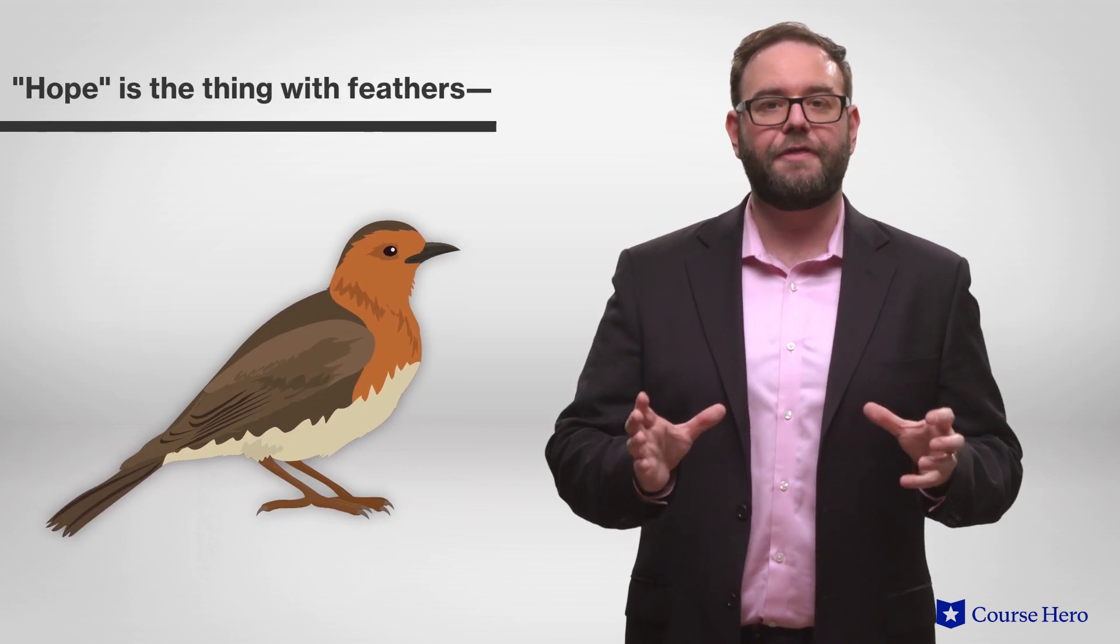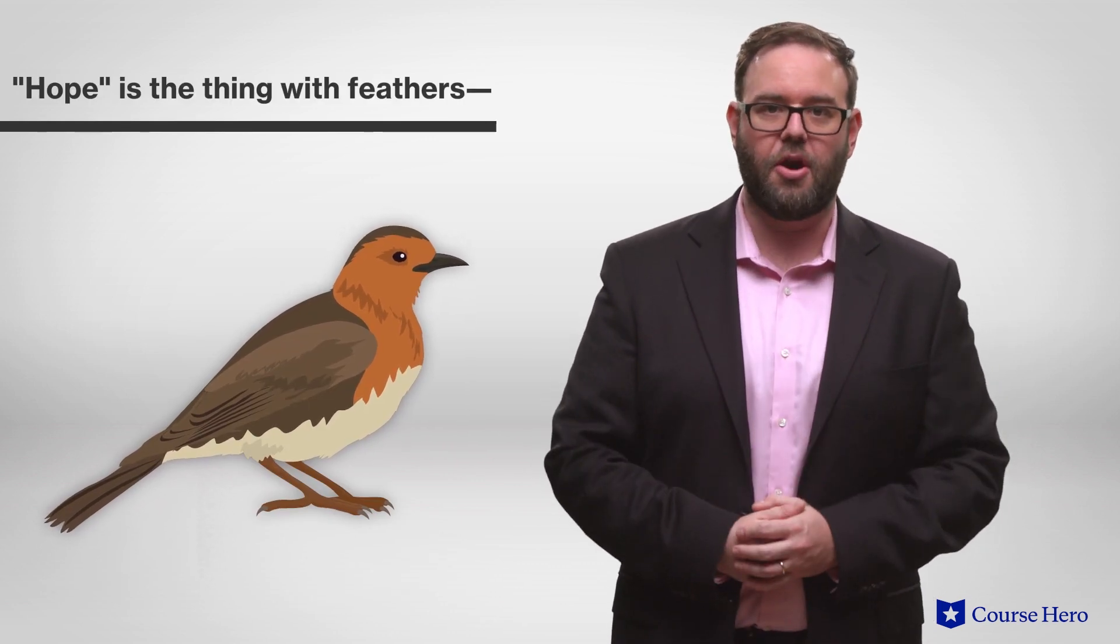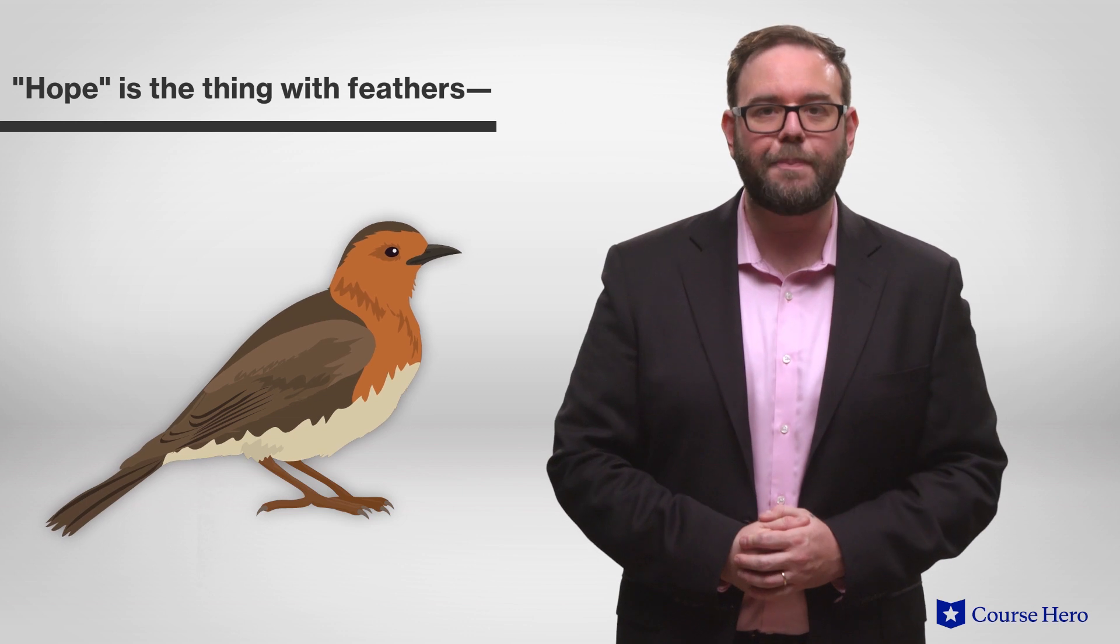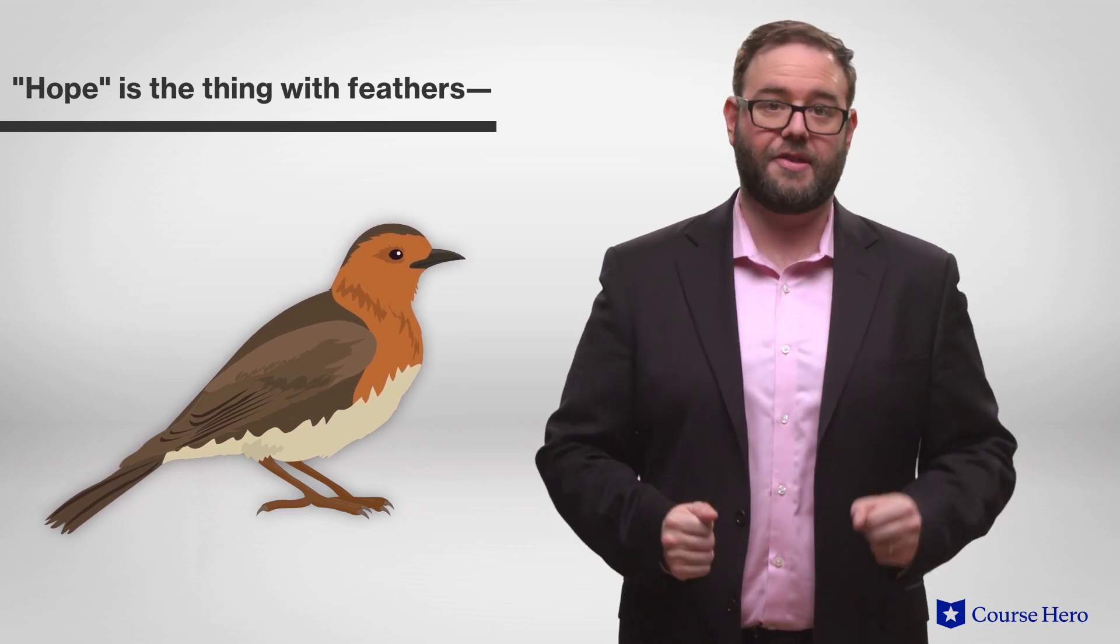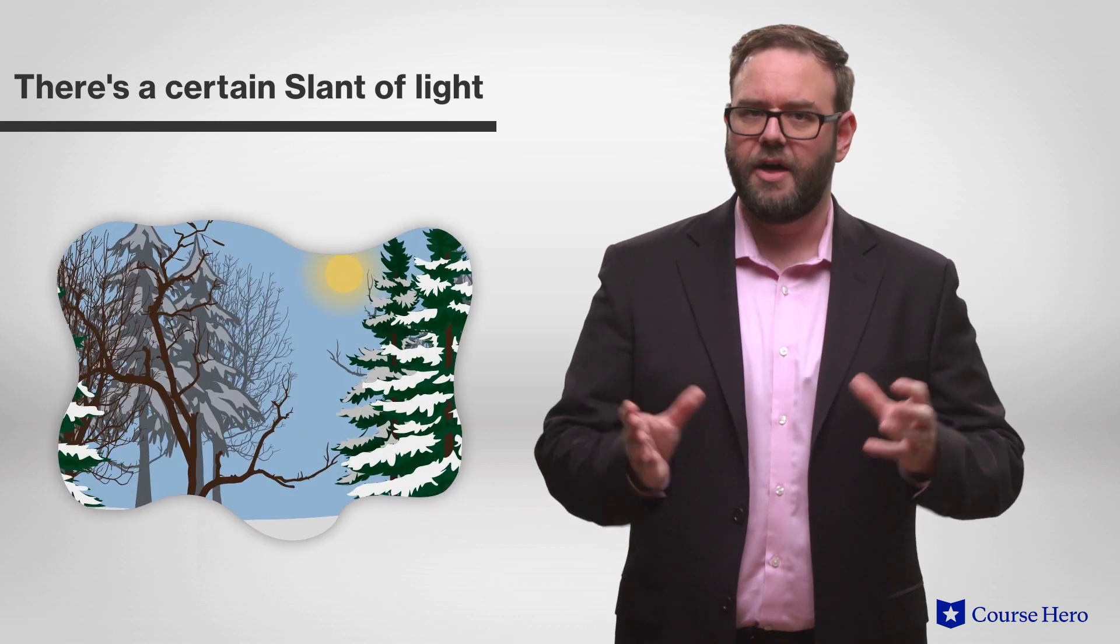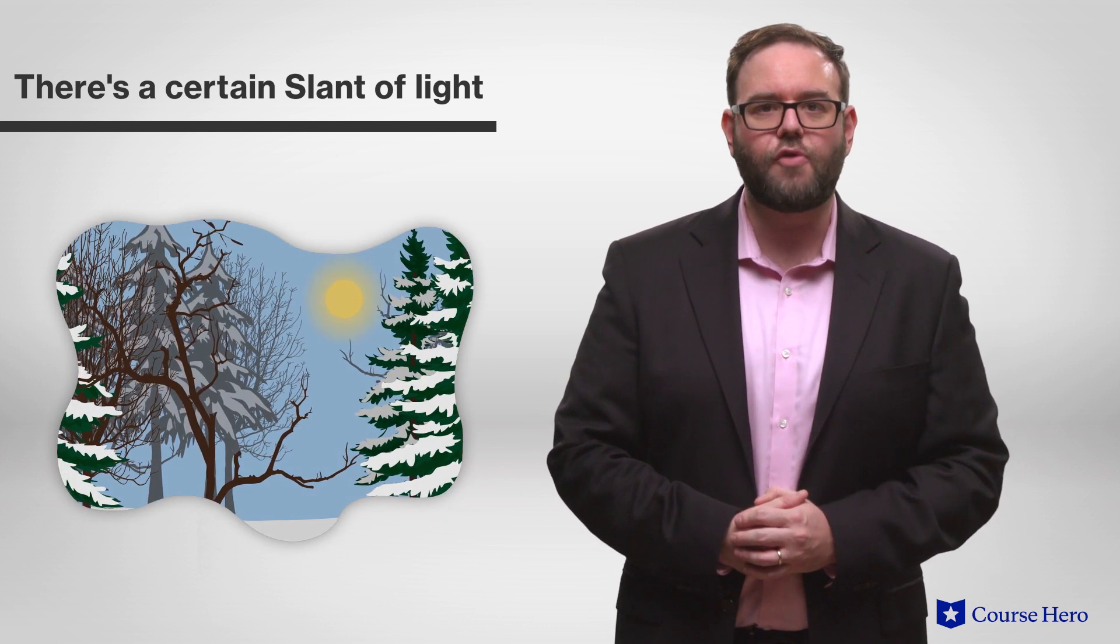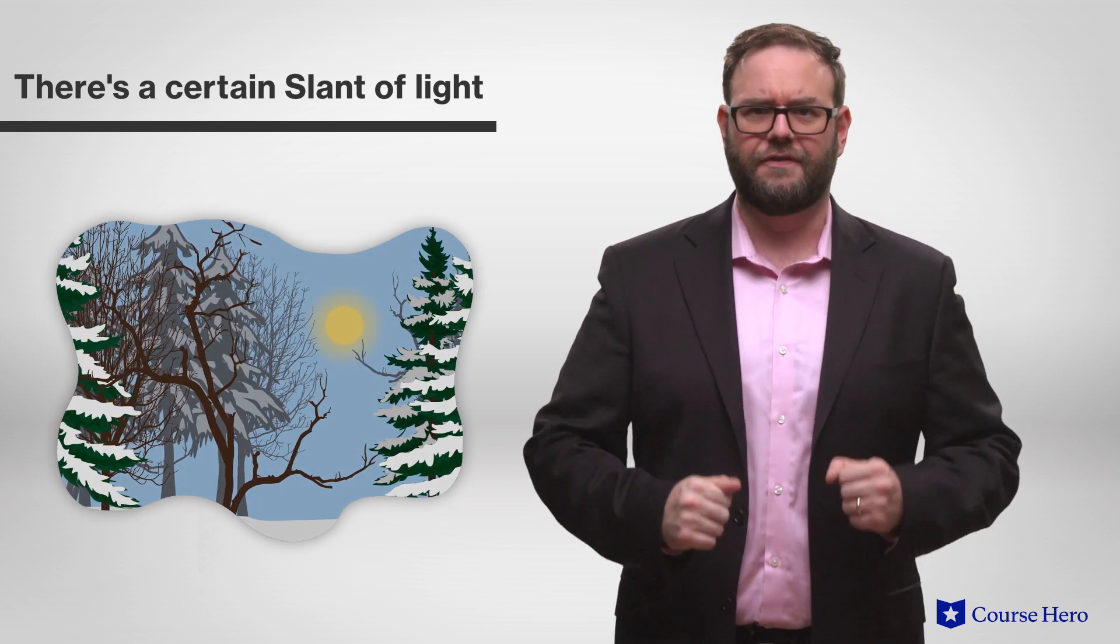In Hope is the Thing with Feathers, hope, characterized as a bird, sits delicately inside a person, always there and never asking for anything in return. In There's a Certain Slant of Light, the light of a winter afternoon is described as oppressive, heavy and full of despair.